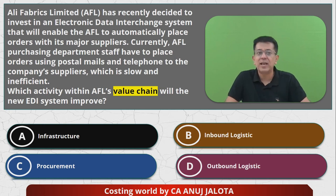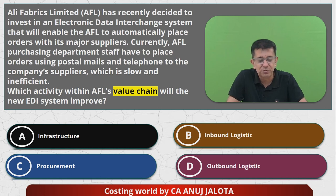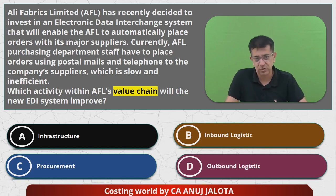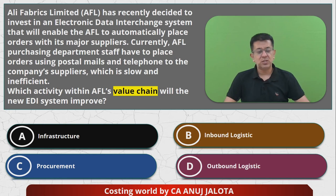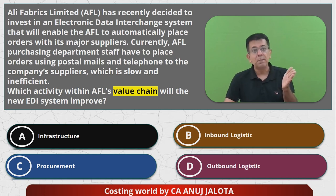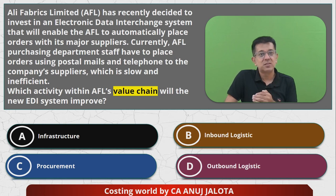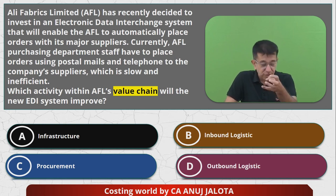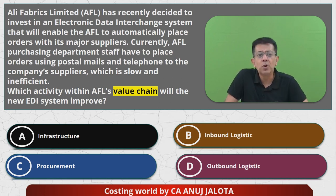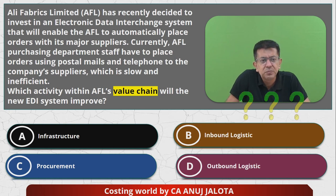Let's eliminate the other options. Option A, Infrastructure — how would this entire EDI system improve infrastructure? It doesn't. Option B, Inbound Logistics — that's only about materials coming into your factory. Option D, Outbound Logistics — that's concerned with finished goods, whereas here we are talking about raw materials. So the answer is clearly C — Procurement.